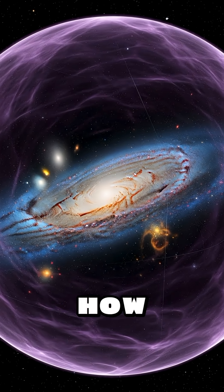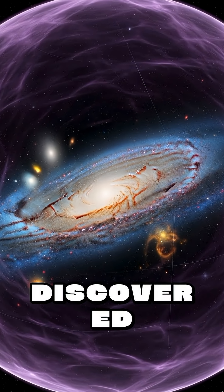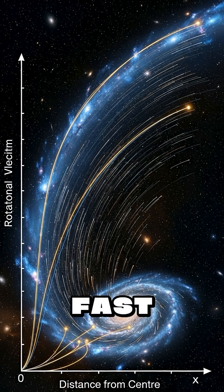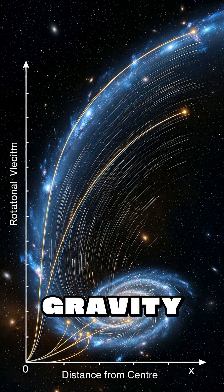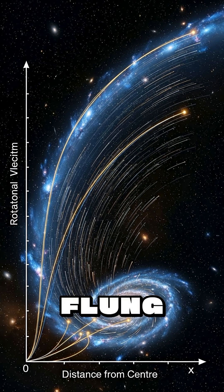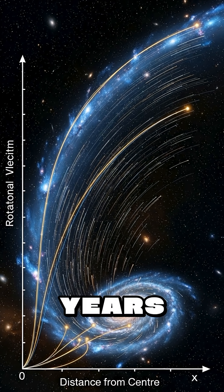When astronomers measured how fast galaxies spin, they discovered something shocking. The outer stars were moving way too fast, so fast that the visible matter's gravity alone couldn't possibly hold them in orbit, meaning they should have been flung into intergalactic space billions of years ago.